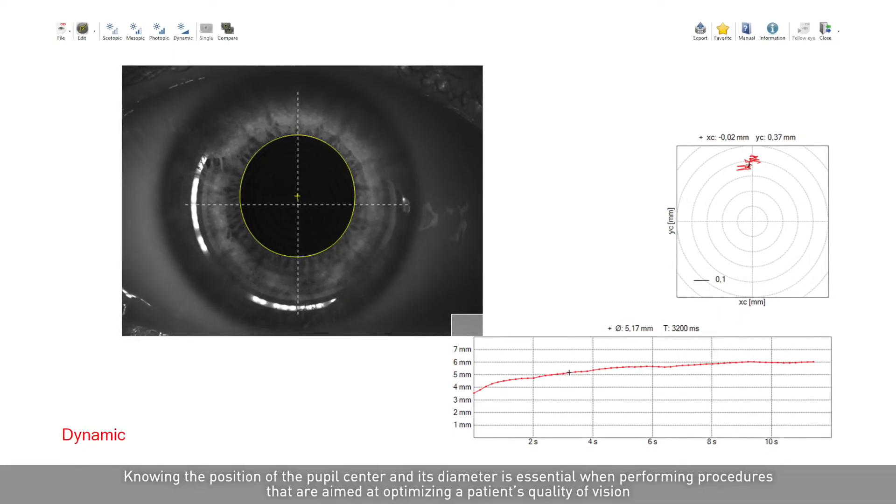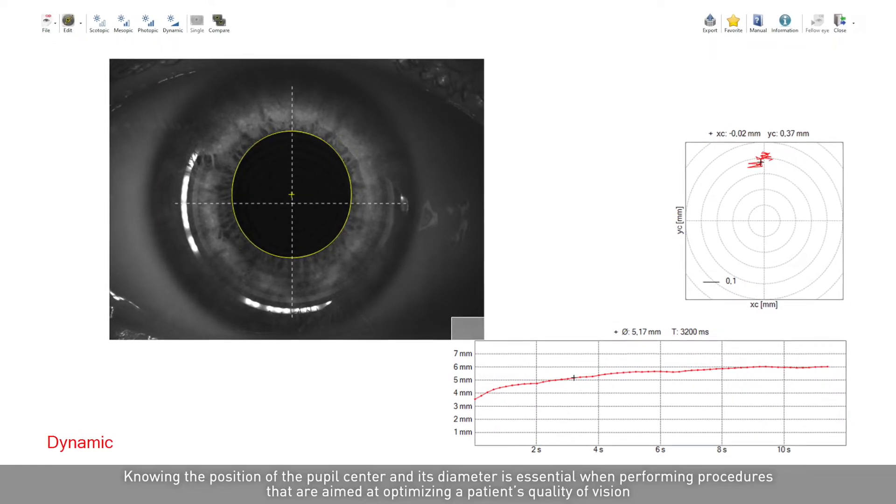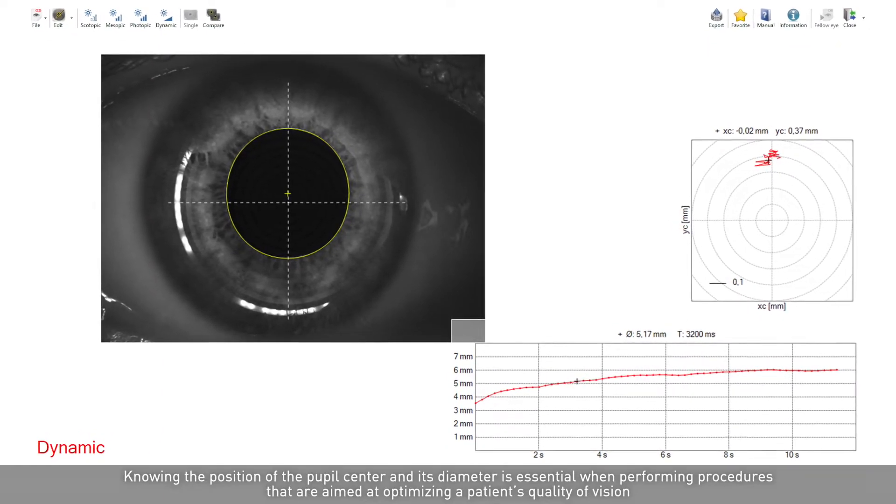Knowing the position of the pupil center and its diameter is essential when performing procedures that are aimed at optimizing a patient's quality of vision.